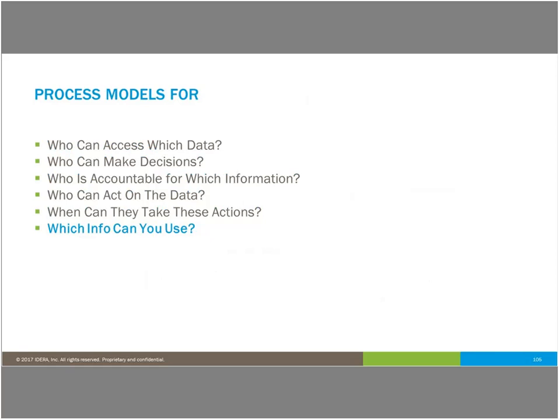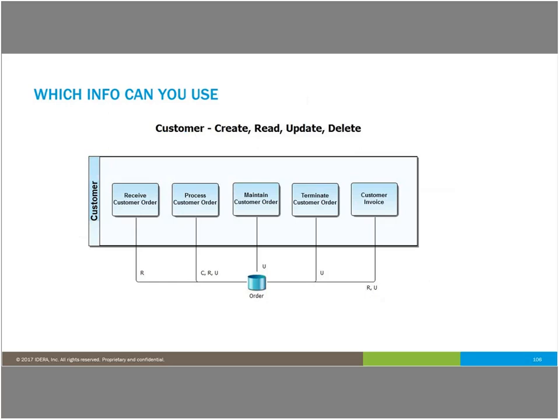Which information can you use? I've taken a customer and a variety of different tasks regarding the customer. We've defined that in these task behaviors, when dealing with the order data store — in what cases can they read it, update it, or create it? In this case, we don't have a delete defined. It's really good to know this information, especially from the data engineering perspective, so that you can understand what the business says they want to have access to at different points in time, so you can lock down the data and prevent it from being manipulated from places where it shouldn't be.